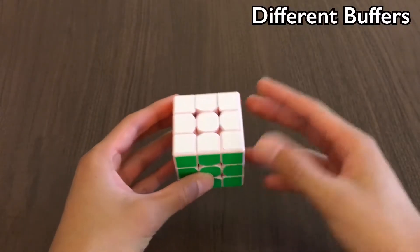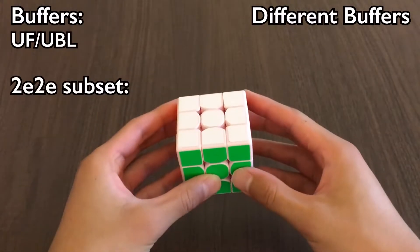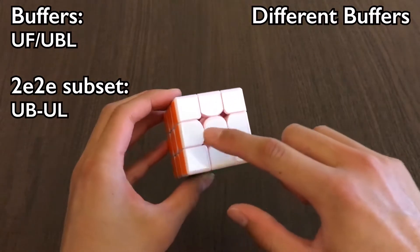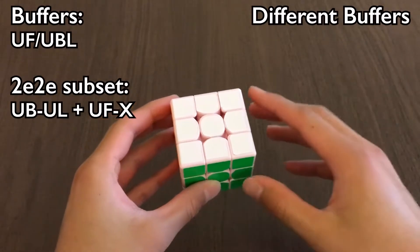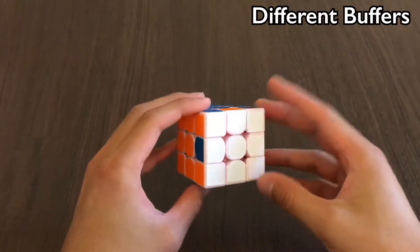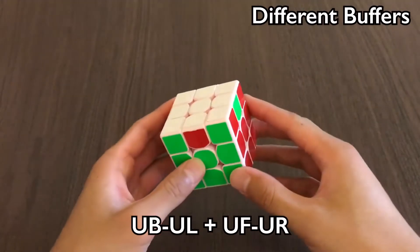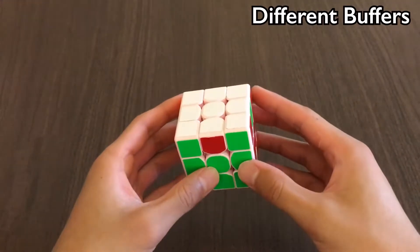If you use different buffers, you want to learn a different subset. Like if you use UF, UBL, you'd want to learn a subset that swaps UB with UL, and UF with any other sticker. An example of a 2E2E like that is this. As you can see, UB needs to be swapped with UL, and UF needs to be swapped with UR. You're probably familiar with this one, as it's just a Z perm.